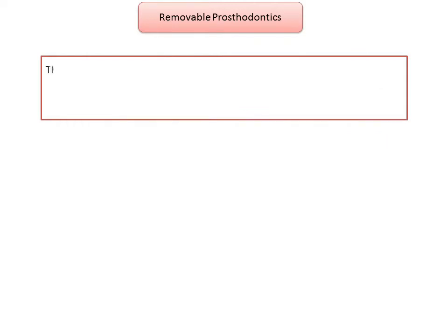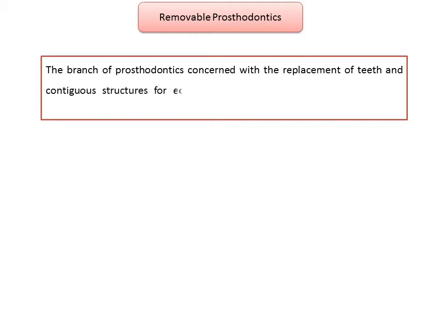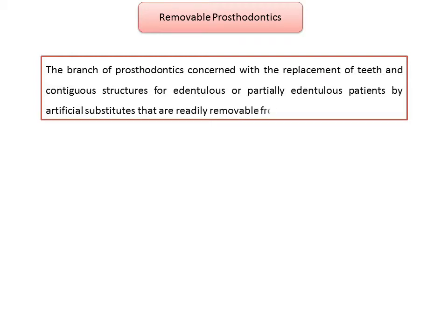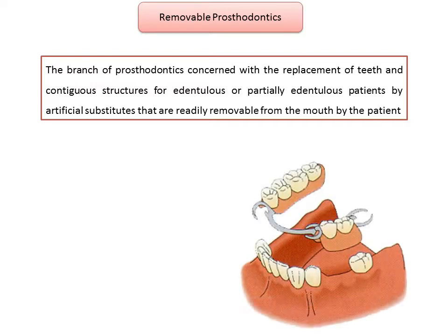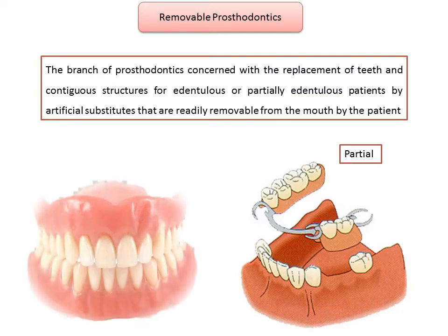Removable prosthodontics is the branch of prosthodontics concerned with the replacement of teeth and contiguous structures for edentulous or partially edentulous patients by artificial substitutes that are readily removable from the mouth by the patient. It includes two disciplines: removable complete denture prosthodontics and removable partial denture prosthodontics.